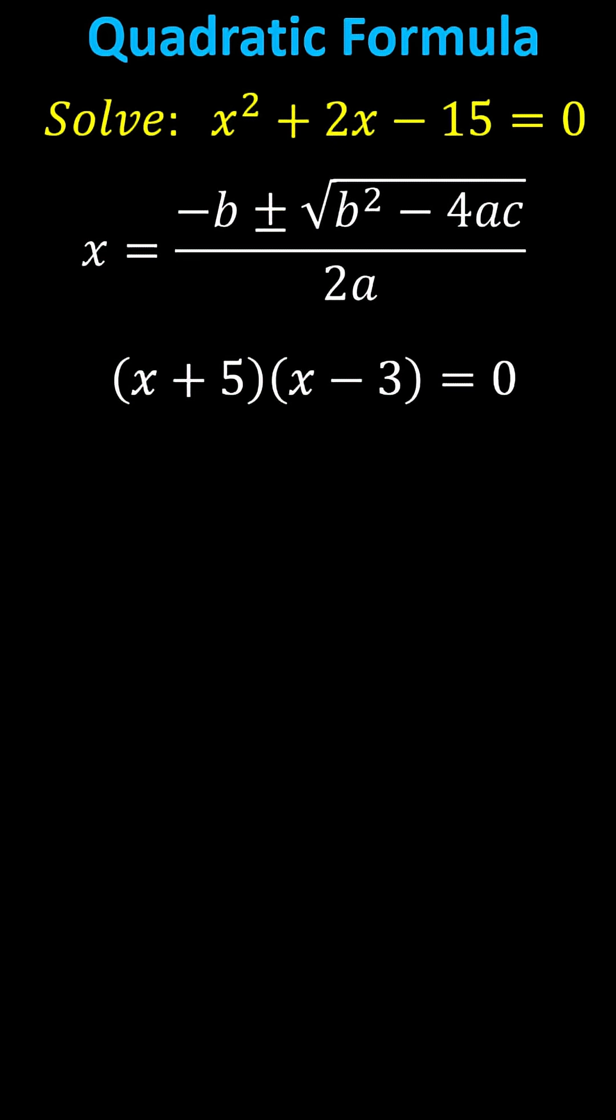This indicates x plus 5 must equal 0, or x minus 3 must equal 0, giving us the same solutions of negative 5 or positive 3. I hope you found this helpful.